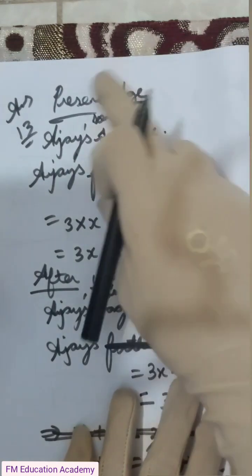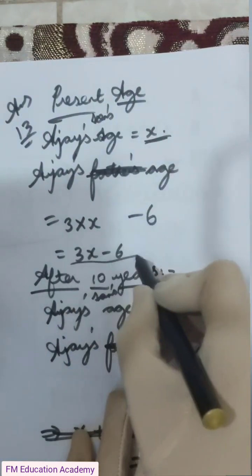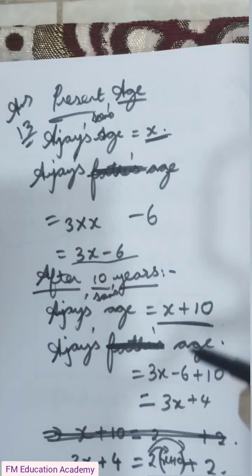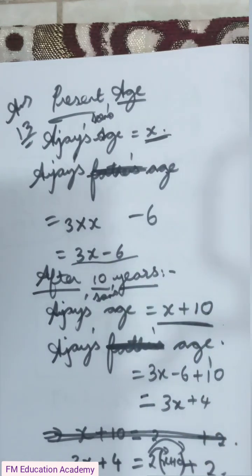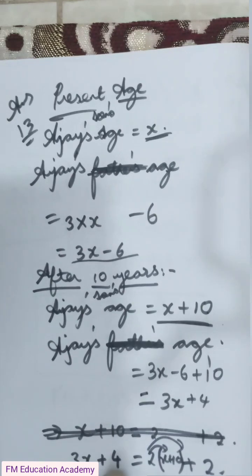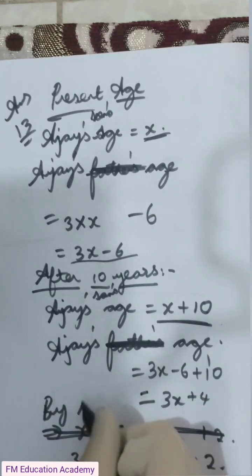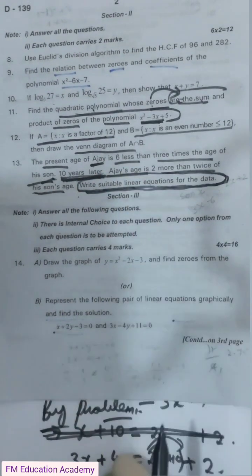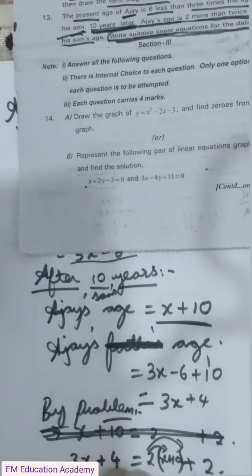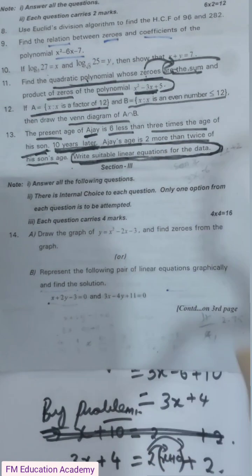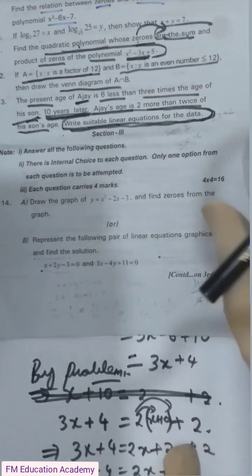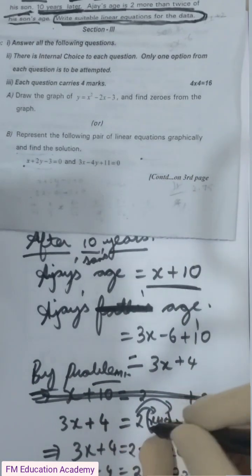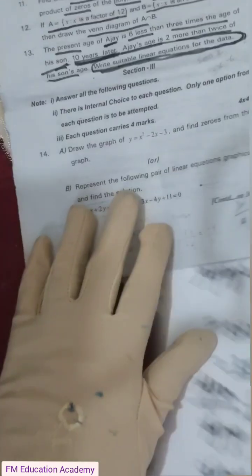To summarize this type of age problem: write equations for present ages of both son and Ajay, then add 10 to both for the future age condition. Ajay's age after 10 years is 3x + 4; setting it equal to 2 more than twice the son's age after 10 years gives the linear equation. Solving yields the value of x.